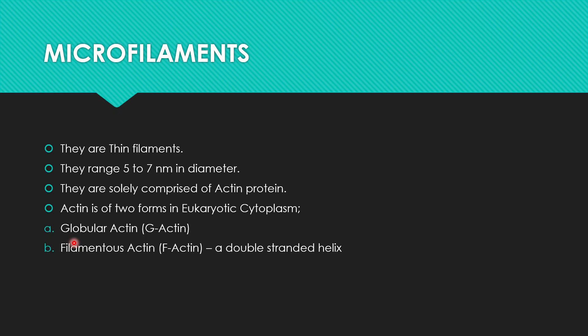Microfilaments are the thin filaments of the cytoskeleton. They range from 5 to 7 nanometers in diameter. They are solely comprised of the actin protein.